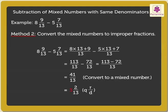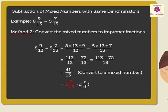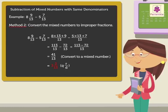Hence, we get 3 and 2 upon 13 as the mixed number. Hope you had fun learning subtraction of mixed numbers with same denominators. We'll see you next time.